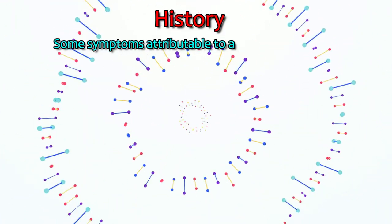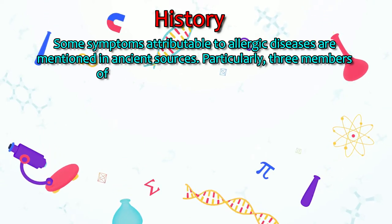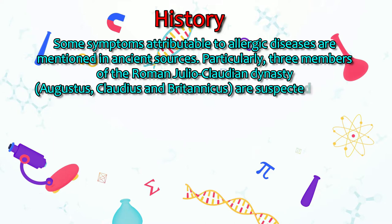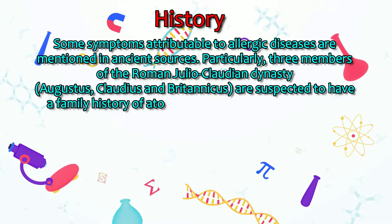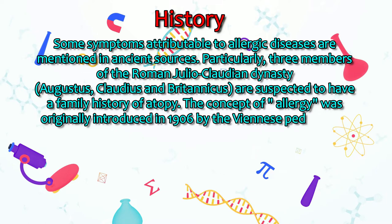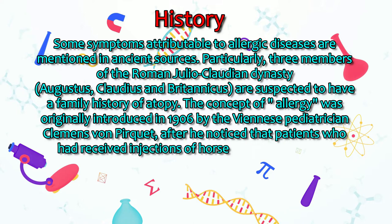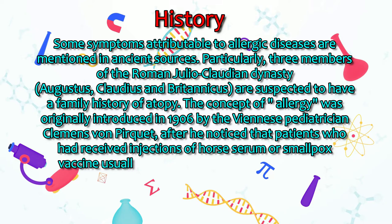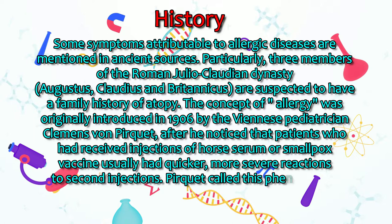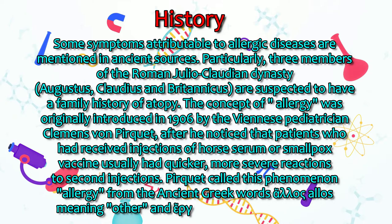Some symptoms attributable to allergic diseases are mentioned in ancient sources. Particularly, three members of the Roman Julio-Claudian dynasty — Augustus, Claudius, and Britannicus — are suspected to have a family history of atopy. The concept of allergy was originally introduced in 1906 by the Viennese pediatrician Clemens von Pirquet, after he noticed that patients who had received injections of horse serum or smallpox vaccine usually had quicker, more severe reactions to second injections. Pirquet called this phenomenon allergy, from the ancient Greek words allos meaning 'other' and ergon meaning 'work.'